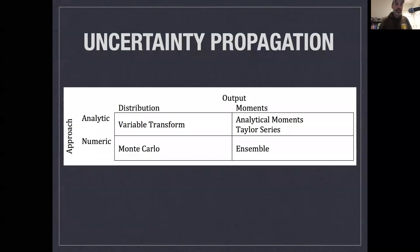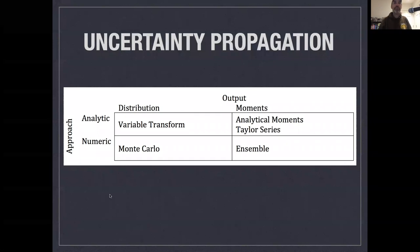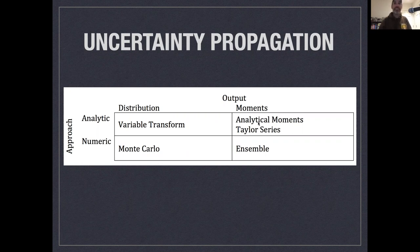Welcome back. In the last video, we were talking about different modes of uncertainty propagation, and specifically talked about exact analytical solutions — either solving for a distribution using a variable transform, or solving for the moments, mostly the mean and variance as analytical moments. The first of these is very hard in practice, and the second only really applies to linear models.